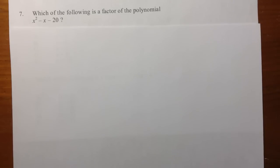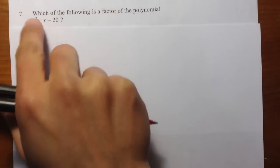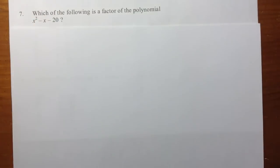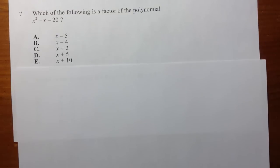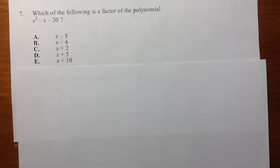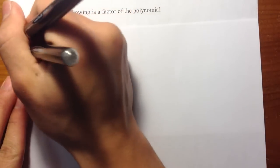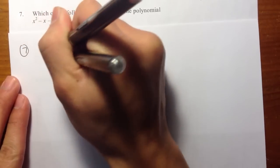Question 7. Which of the following is a factor of the polynomial x squared minus x minus 20? If we take a look at the answer choices, we have five choices right here. And without knowing how to do factoring properly, this answer choice wouldn't help. So let me talk about how do you break this down. How do you factor x squared minus x minus 20?